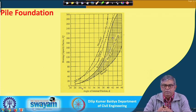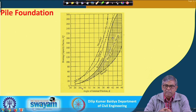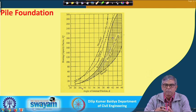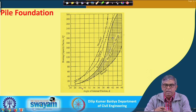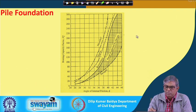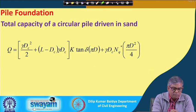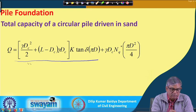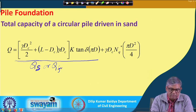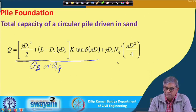So ultimately, the capacity of a single pile consists of a skin friction part and a tip resistance part. We have shown how to find both components. Adding them together gives the actual ultimate capacity of a single pile driven in sand. The diagram shows qs (skin friction) from top to the pile base and qt (tip resistance) at the base.